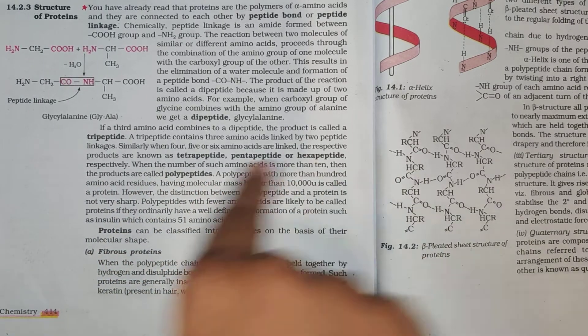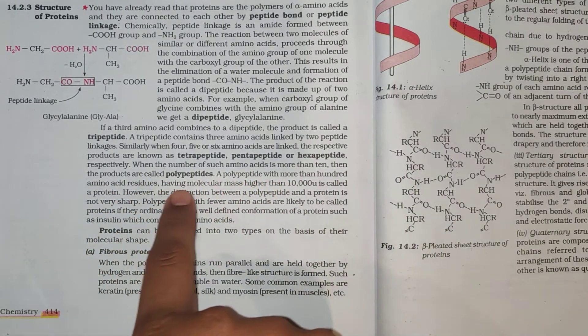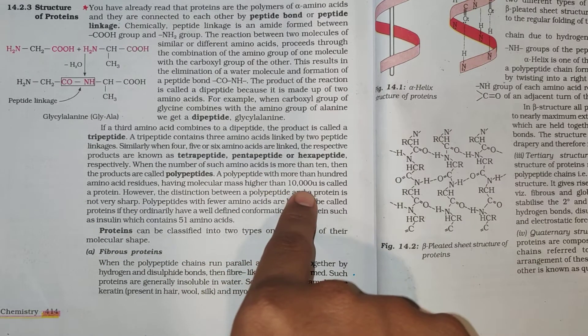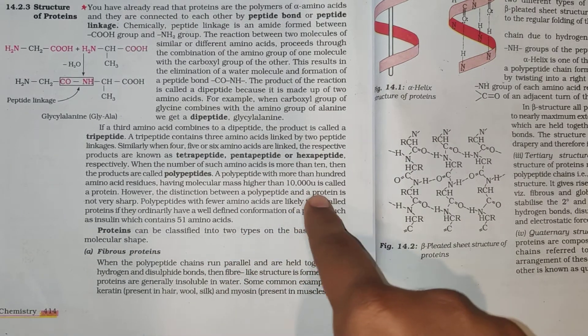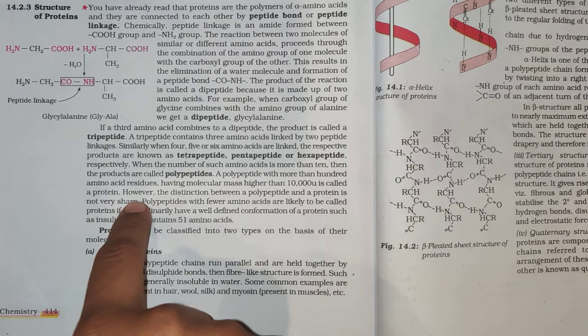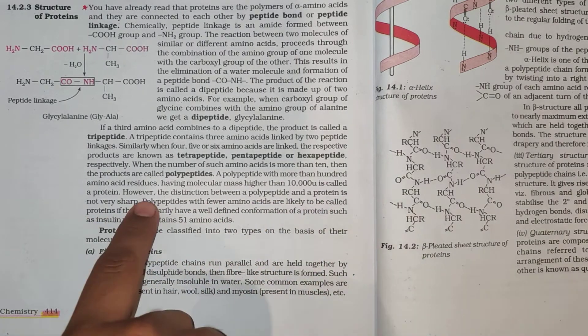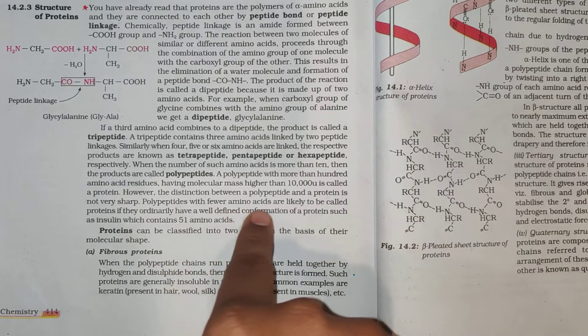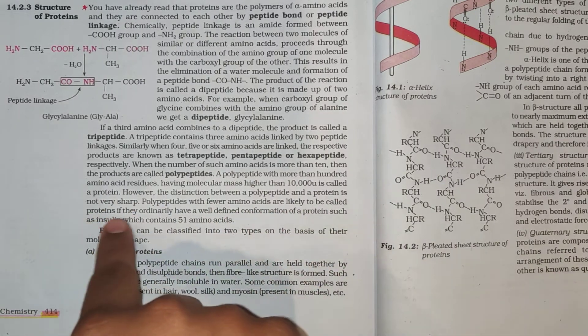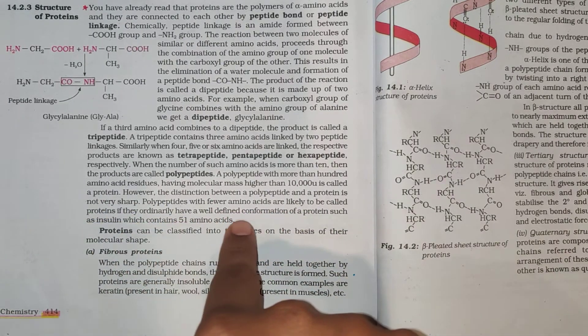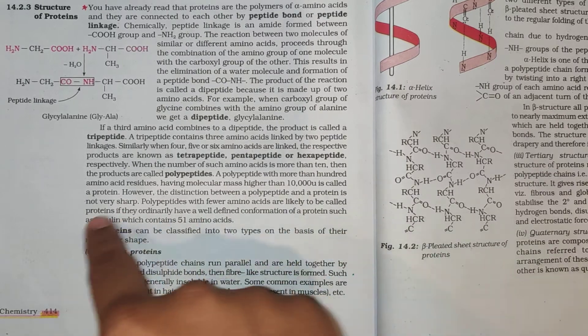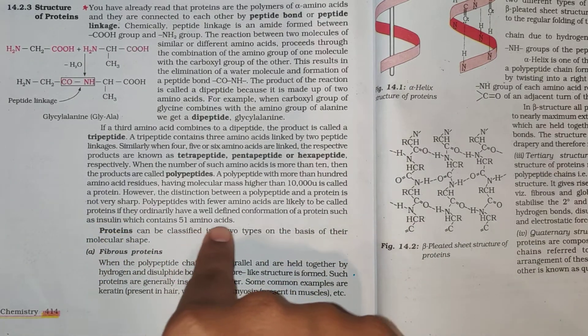A polypeptide with more than 100 amino acid residues having molecular mass higher than 10,000 mu is called a protein. However, the distinction between a polypeptide and a protein is not very sharp. Polypeptides with fewer amino acids are likely to be called proteins if they ordinarily have a well-defined conformation of a protein such as insulin which contains 51 amino acids.